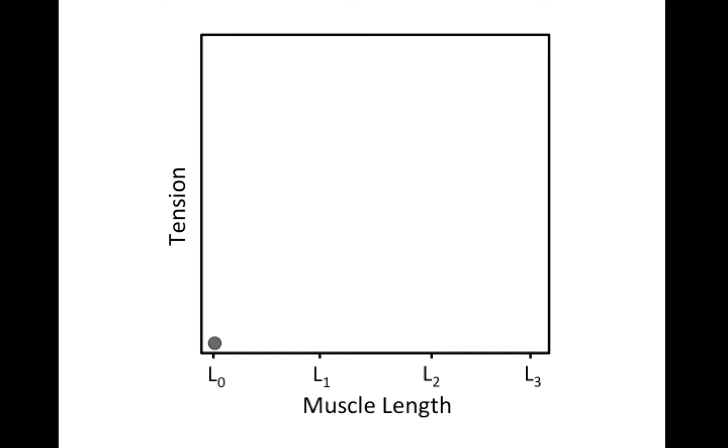We can summarize these experimental results by plotting the data such as this. This is what we call the passive length-tension curve for the cardiac muscle. Note that at short lengths, as you increase the muscle length, the tension does not increase very much. As we get to really long lengths, there is a large increase in the passive tension, characteristic of biological tissues.